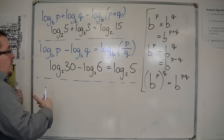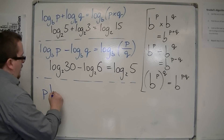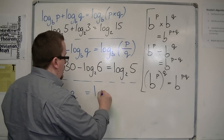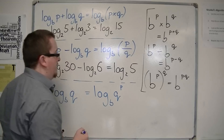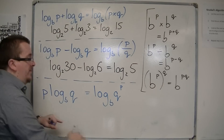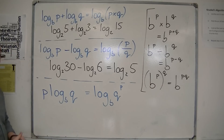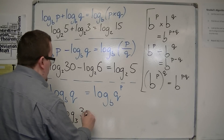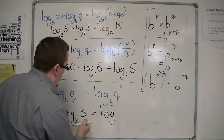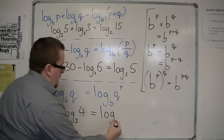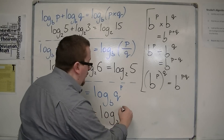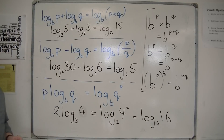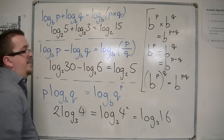The third log law says that p times log base b of q equals log base b of q to the power of p. In other words, the coefficient p in front of the logarithm can be brought up to the power, and vice versa. For example, 2 times log base 3 of 4 equals log base 3 of 4 squared, which is log base 3 of 16. These are exactly the same, and this relates directly to the third index law.